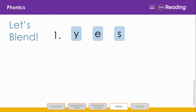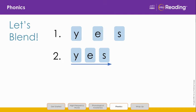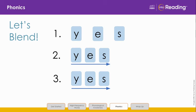Let's do another one. We are going to blend the letters in line 1 to read a word. Say the letters and sounds with me: Y, Y, E, S, S. Let's push the letters together. Listen as I slowly blend each sound: Y, E, S — Yes. Now look at line 3 and blend the word with me: Y, E, S — Yes. Nice work!